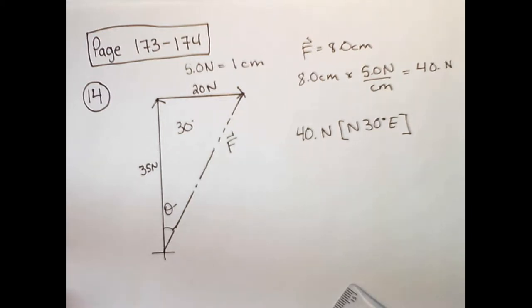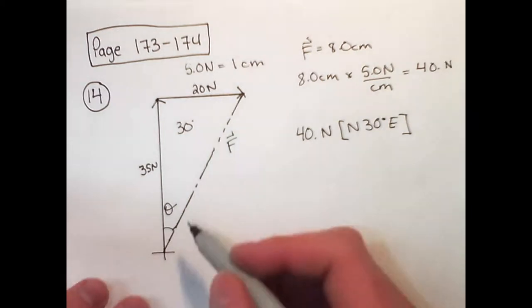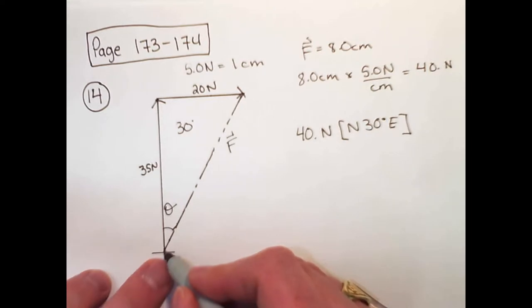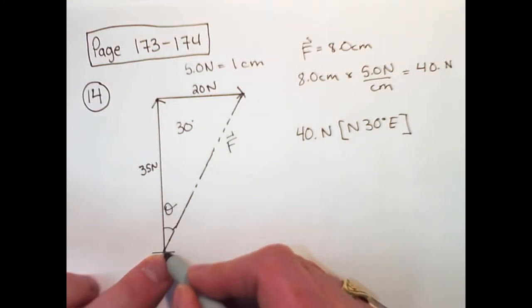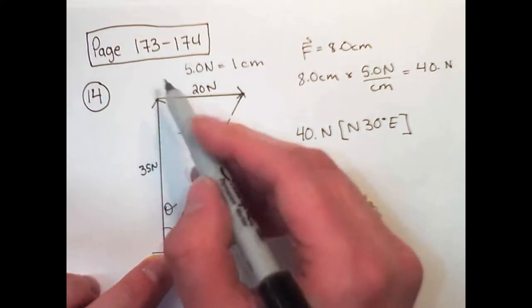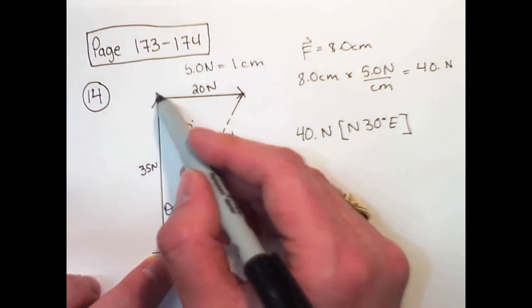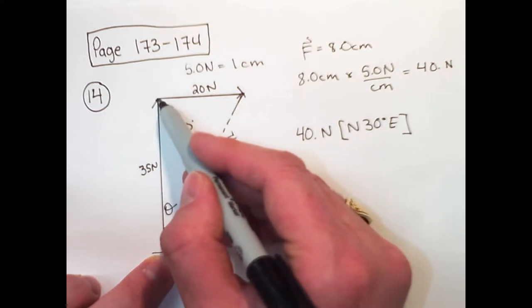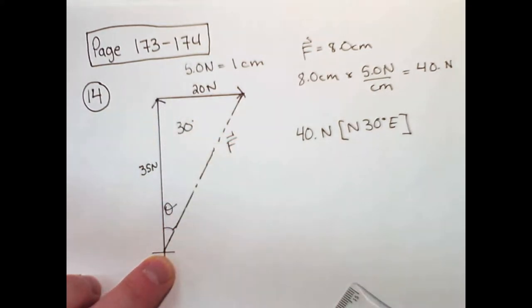Remember that when doing your vector addition, start with your tail from a random spot you can pick, and make sure you add your second vector head to tail. If you don't do that, you'll end up with the wrong direction at the end, or potentially even the wrong magnitude.